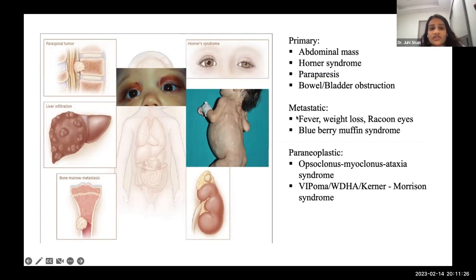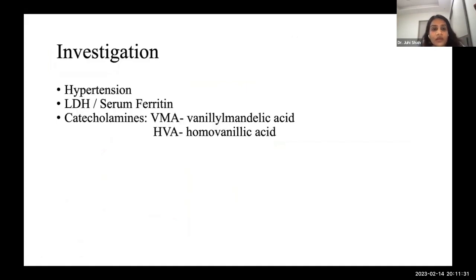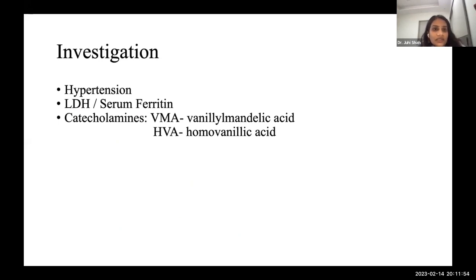Neuroblastoma is a heterogeneous disease presenting in varied forms. Important clinical clues include hypertension in a child with an abdominal mass, raised LDH and serum ferritin indicating tumor load. Ninety percent of neuroblastomas are catecholamine-secreting, with elevated VMA and HVA in the urine.